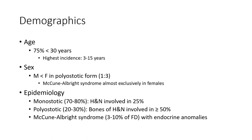Demography: 75% of cases occur in patients less than 13 years old, with higher incidence between 3 to 15 years. Male is less than female in polyostotic form. McCune-Albright syndrome occurs almost exclusively in females.